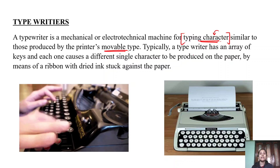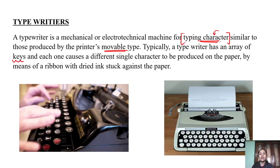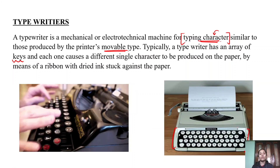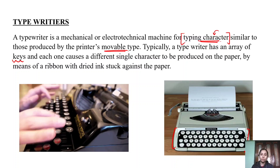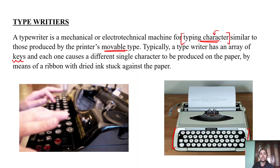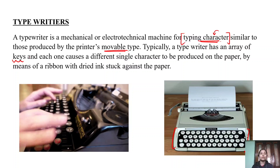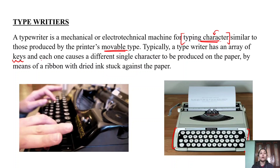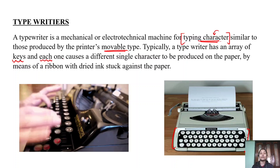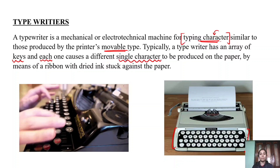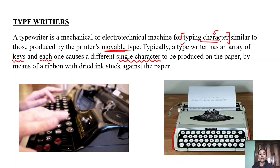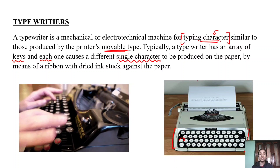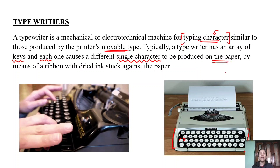Typically, a typewriter has an array of keys — alphabets, numbers, signs, and punctuation marks, similar to a desktop or laptop keyboard. Each key causes a different single character to be produced on the paper. As you press a character, it will generate a single character on that page — for example, if you press A, it generates A on your page.